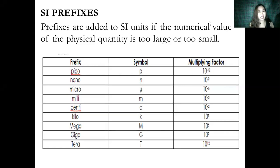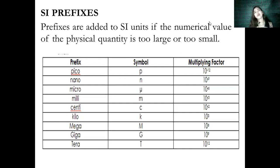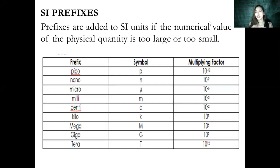Let's have our next topic about SI prefixes. Prefixes are added to SI units if the numerical value of a physical quantity is too large or too small. We will be converting SI prefixes to SI prefixes, or units to SI prefixes, or prefixes to units — recalling what you have discussed in Chemistry 1. Let's have an example.